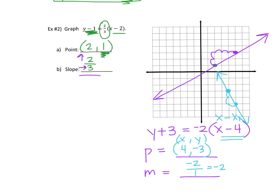When it's y minus something, the y-value tends to be positive. The formula says y − y₁ = m(x − x₁). So if I plug in a negative number — say y₁ is negative four — when I do that and simplify, minus a negative is plus a positive. So it's y + 4, because we were subtracting a negative number. It will always look opposite of what it actually is because we're subtracting it.